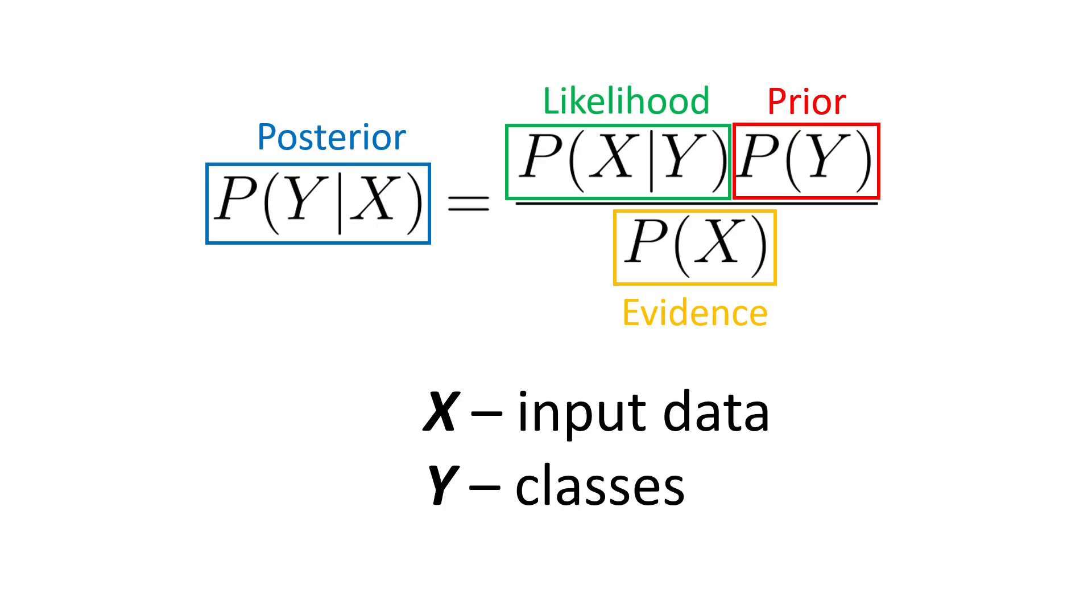To better understand this theorem, let's give some more meaningful names to our variables in accordance to machine learning. So A in this case is Y or the classes and B is X or the data. Also in naive Bayes we are usually not interested in P of X in the denominator or the probability of seeing that data. We are interested only in classifying the data so we can just ignore that term.